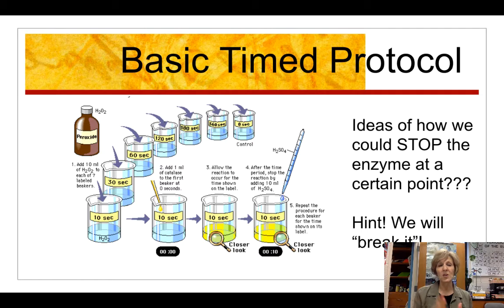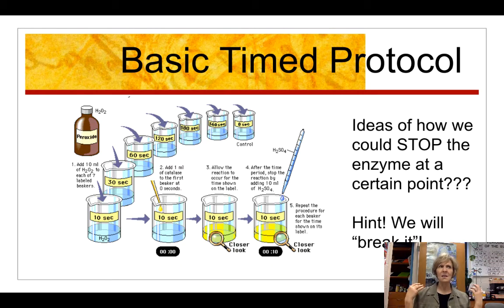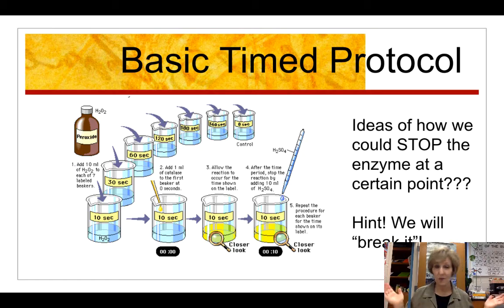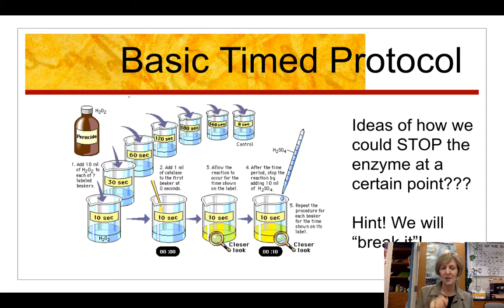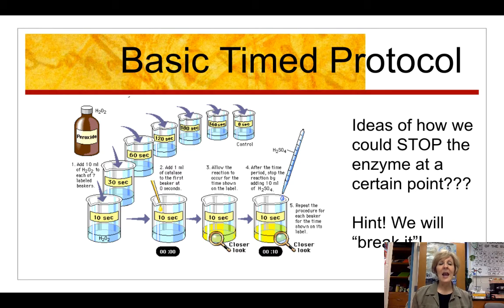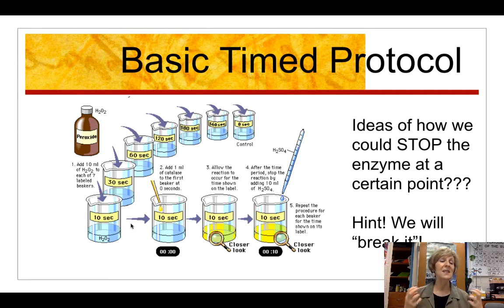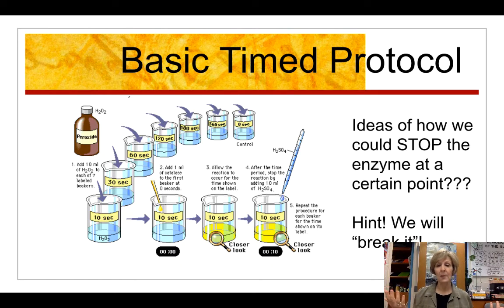We're going to use a timed protocol to measure how much H₂O₂ is left at certain seconds into the reaction — 10, 30, and 60 seconds. To stop the reaction at those exact times, we're going to add sulfuric acid, which will denature the catalase by changing the three-dimensional shape of the enzyme so it no longer works. This lets us measure the remaining hydrogen peroxide at each time point without having to rush through the titrations.